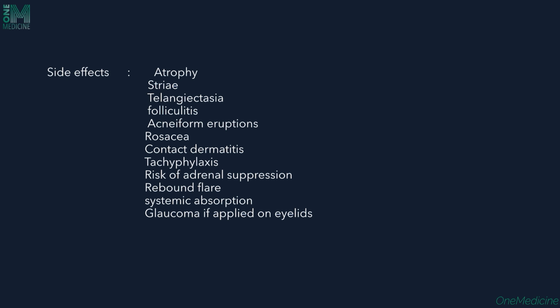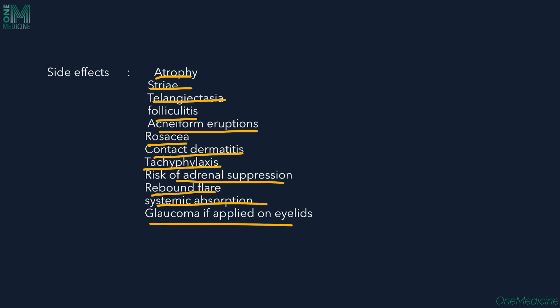Side effects of topical corticosteroids include atrophy, striae, telangiectasia, folliculitis, acneiform eruption, rosacea, contact dermatitis, tachyphylaxis, adrenal suppression, rebound flare, systemic absorption, and glaucoma if applied on the eyelids. The course-benefit ratio must always be weighed. Low potency steroids can be applied on the face, groin, and axilla; higher potency on palms, soles, and thick keratotic lesions. Foams are available for scalp, palms, and truncal lesions.